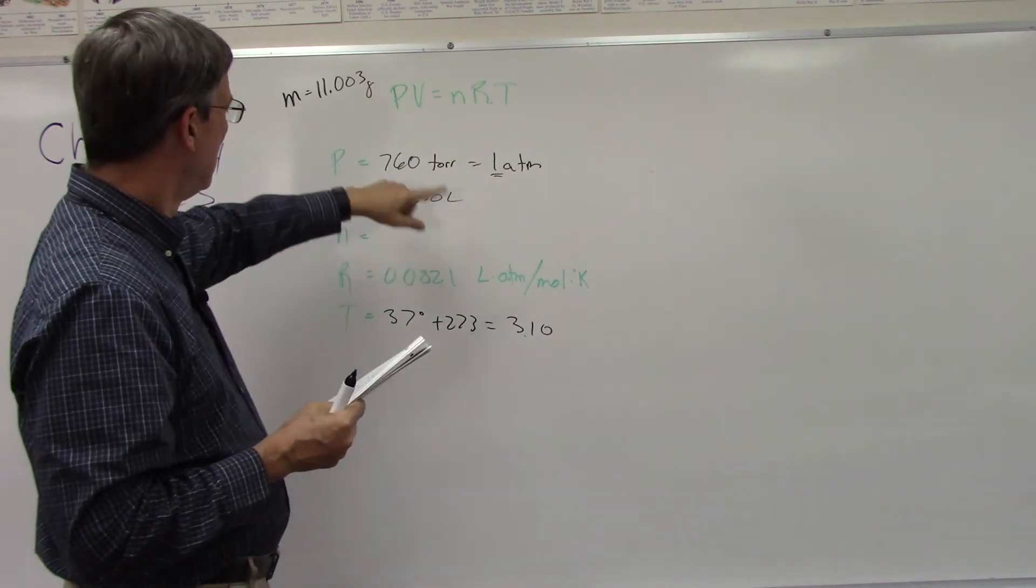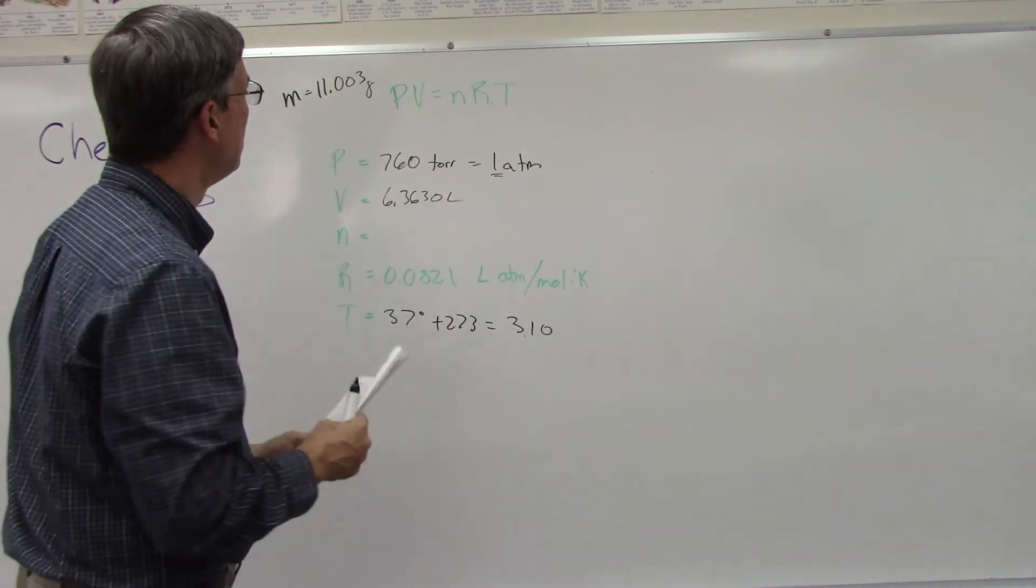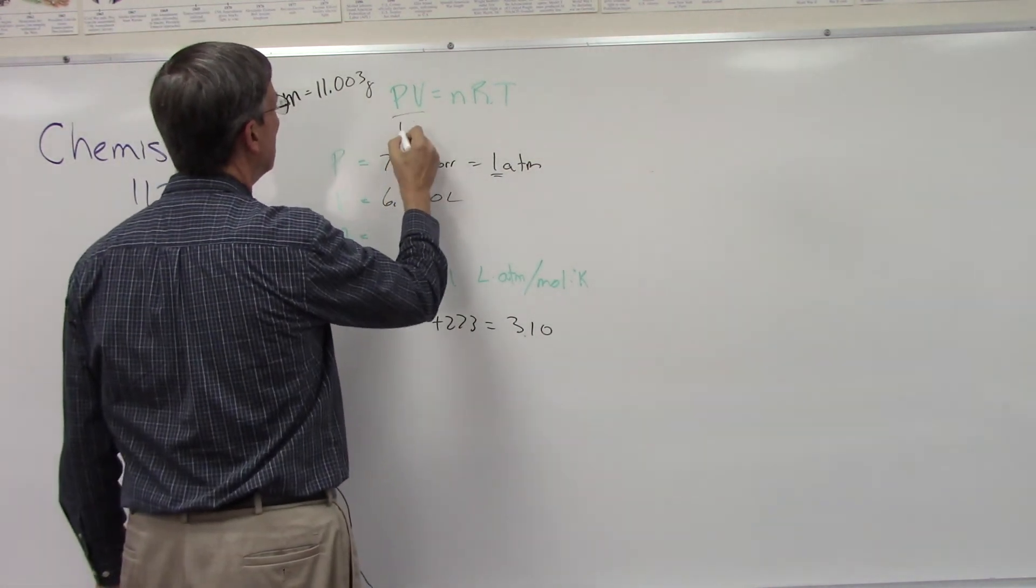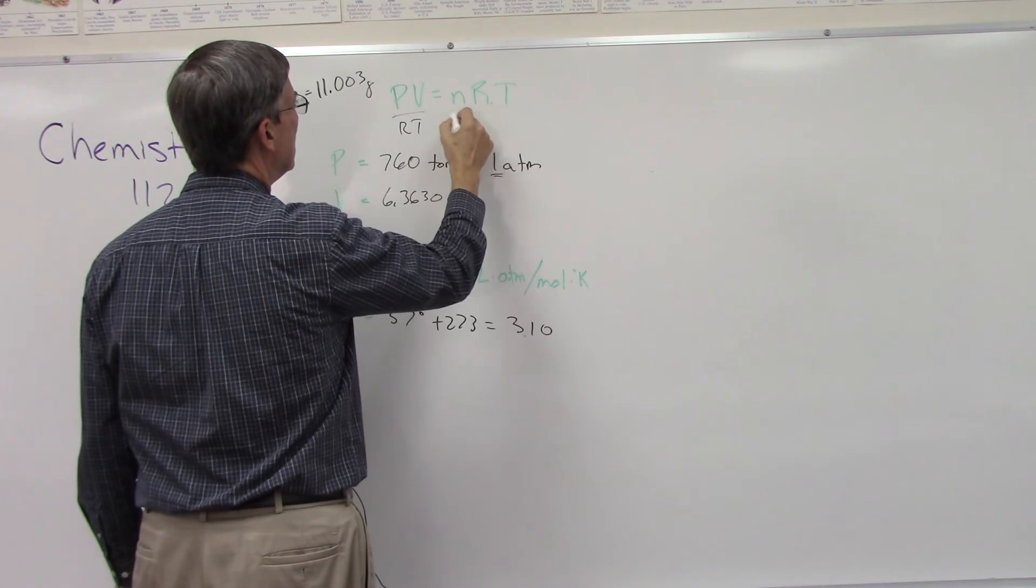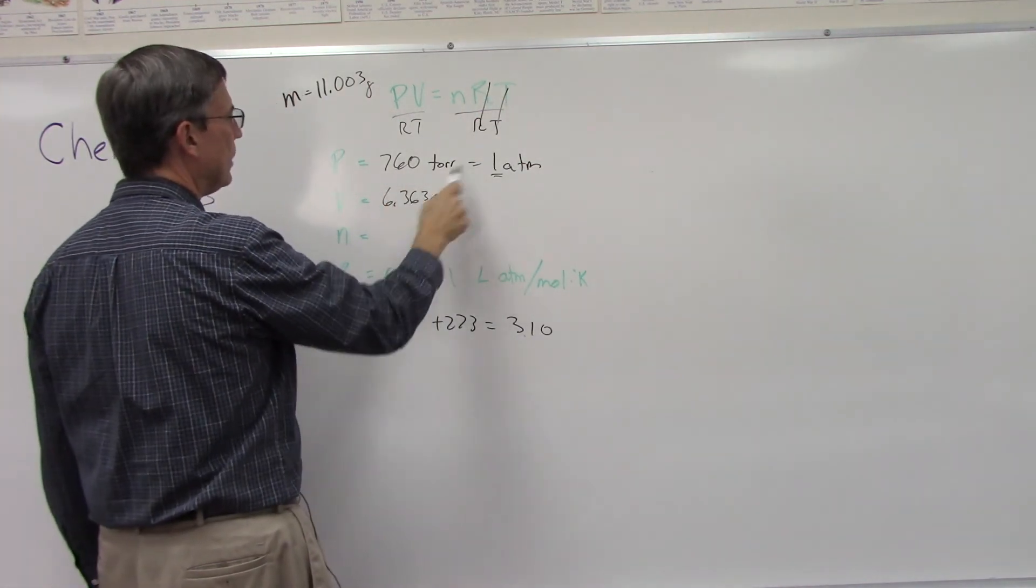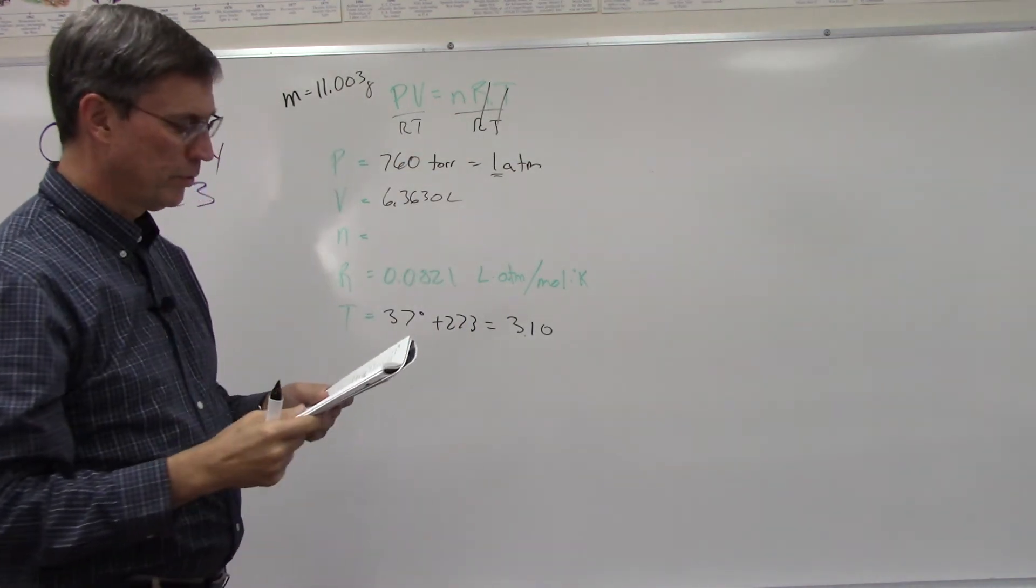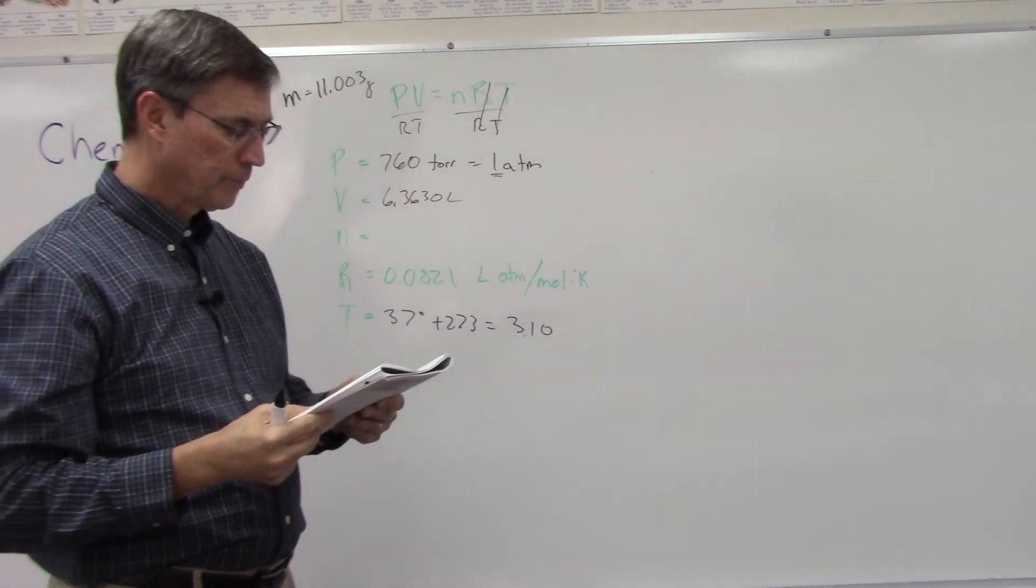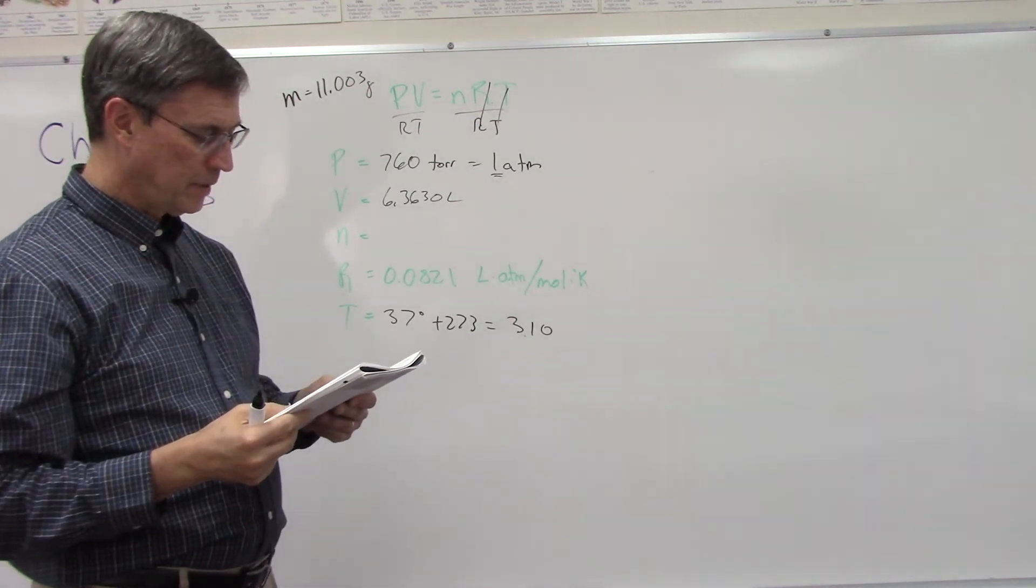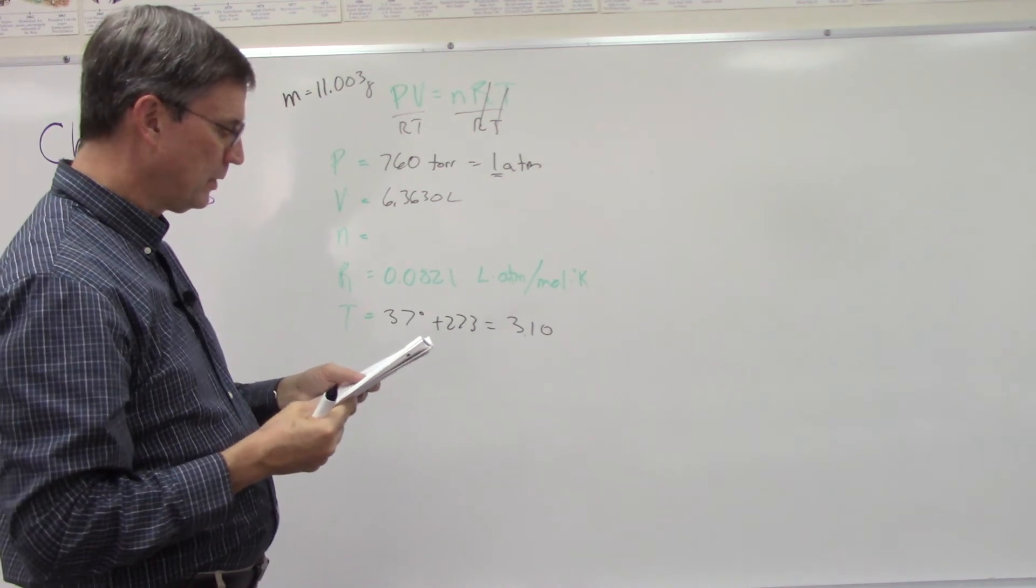What is that going to help us find? Well, the one thing we don't know is n. So we're going to divide by RT, divide this side by RT and that'll cancel. So we can plug all these numbers in and solve, and we'll have the number of moles. Once we know that, and we know the mass that was given...